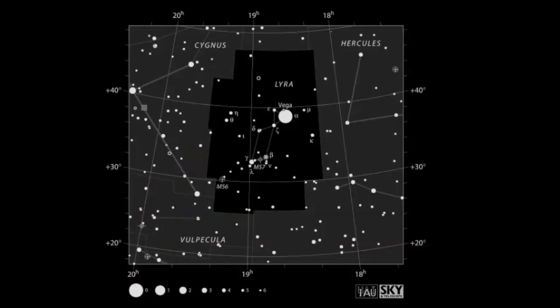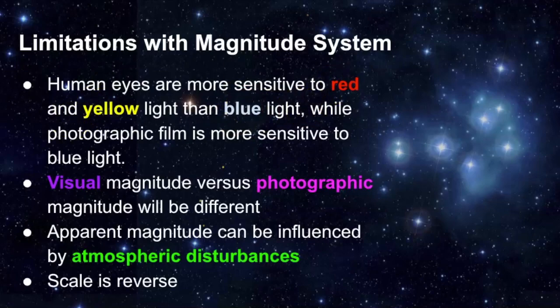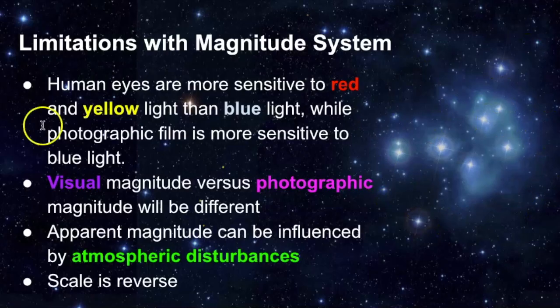We know there are some limitations of this system. Human eyes are more sensitive to red and yellow light than blue light — as you can see, this is colored blue but it doesn't stand out as much as red and yellow. Photographic film tends to be more sensitive to blue light, so visual magnitude versus photographic magnitude will definitely be different. We are limited by our human eyes, and we can capture things on photographs that we wouldn't be able to see otherwise.